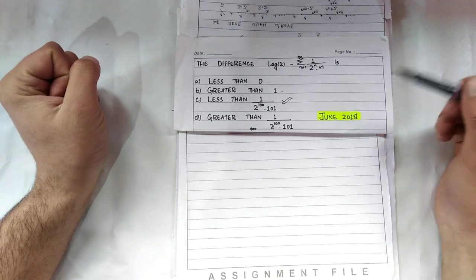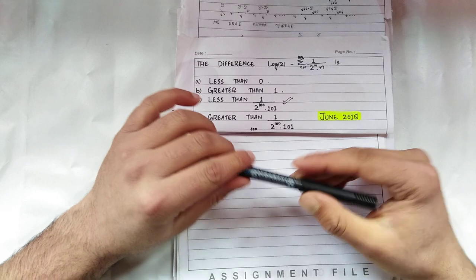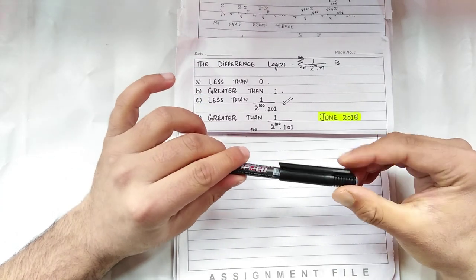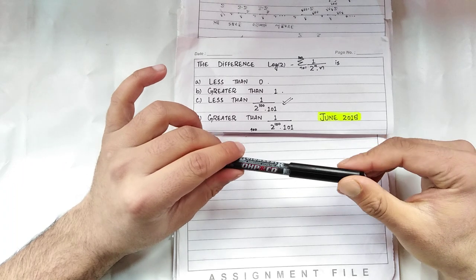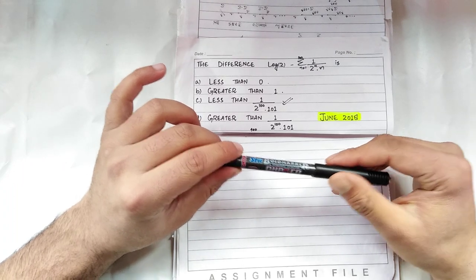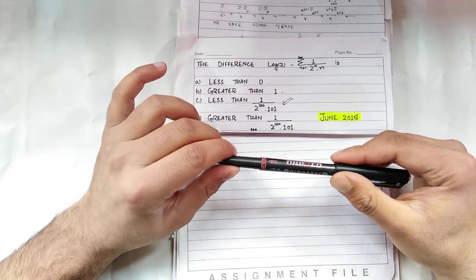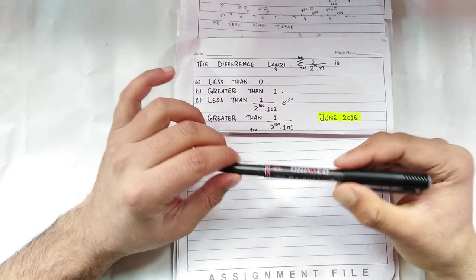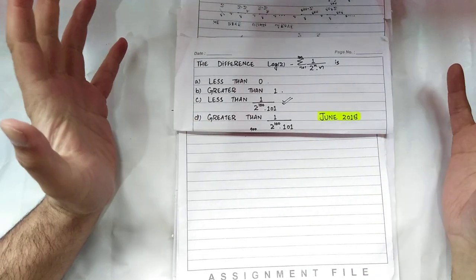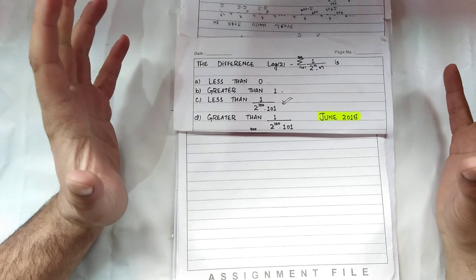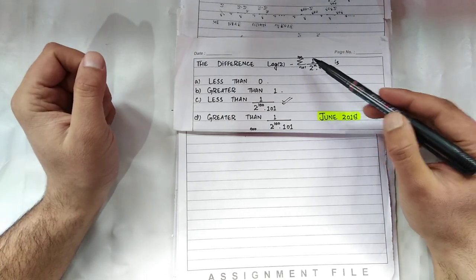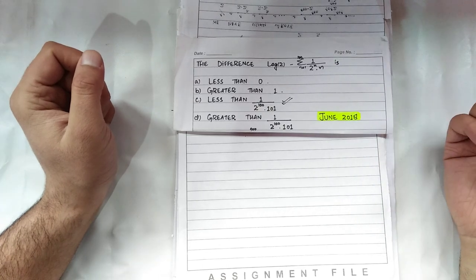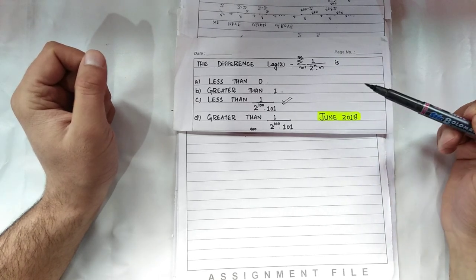Hello everyone, in this video we are going to discuss a question that was asked in June 2018 by CSIR NET. The question asks us to find the difference between log of 2 and the sum that goes from 1 to 100: 1 upon 2 power n multiplied by n, and we have to check which option is correct.